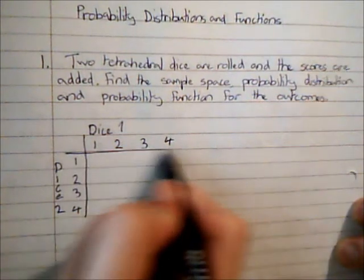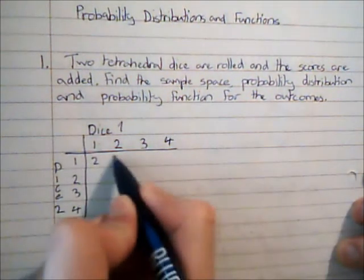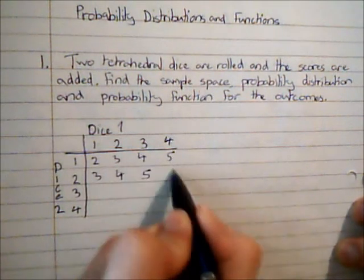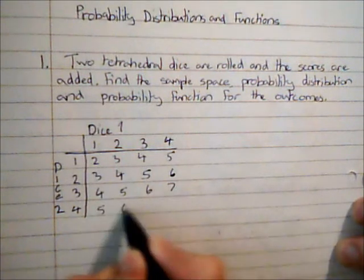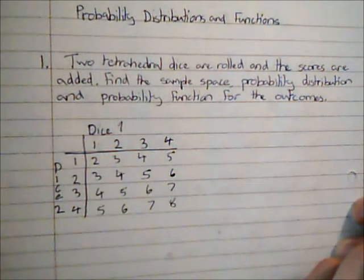So this resulting grid then is my sample space. It says the scores are added, so I can show the results that are obtained when adding. So there is our sample space with 16 outcomes, of which some of those outcomes have the same value.